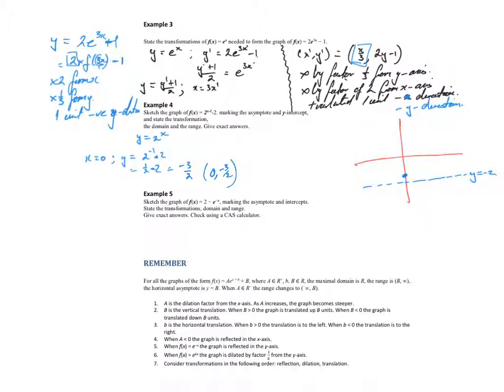Then we've got our x-intercept. Put y equal to 0. So I've got 0 equals 2 to the (x-1) minus 2. So 2 equals 2 to the (x-1). Since the bases are the same, we can equate the powers. So 1 equals x minus 1, so x equals 2. I get the point (2, 0), about there.